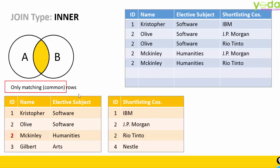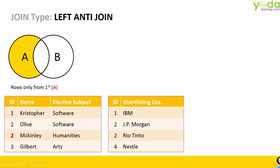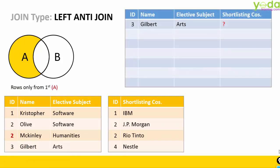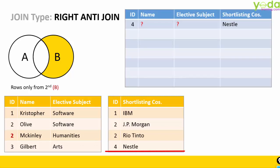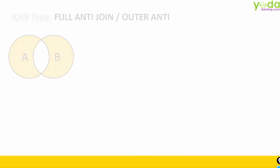Inner Join means only matching or common rows. Next, Left Anti — it means only those rows which are only part of Table A. In our case, it is going to be ID number 3. Similarly, Right Anti Join means those IDs which are only part of Table B. Nestle is the only entry appearing in the final table. Of course, there are other types of joins such as Full Anti Join or Outer Anti, but we will not be discussing those in this video.